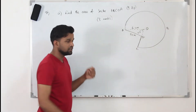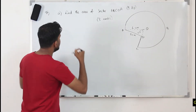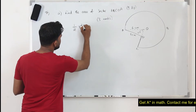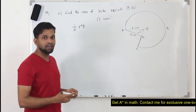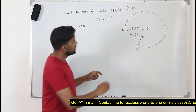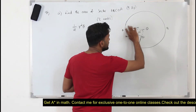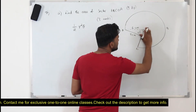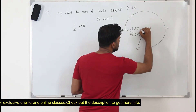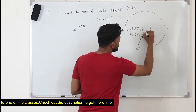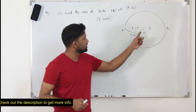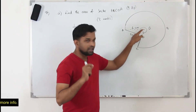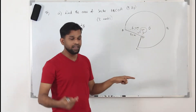We need to find the area of this major sector. In radians, the area of a sector is half R squared theta, where theta is the angle in radians. But here we don't know this angle — if you want to find the area of the major sector, you need to know this angle, which we don't have directly. But all we know is that in radians, the angle around a point at the center of the circle is 2π radians.